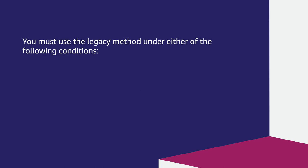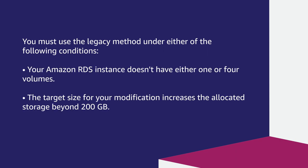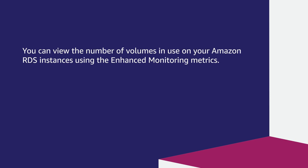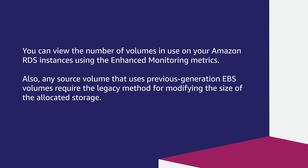You must use the legacy method under either of the following conditions: your Amazon RDS instance doesn't have either one or four volumes, or the target size for your modification increases the allocated storage beyond 200 GB. Also, any source volume that uses previous generation EBS volumes requires the legacy method for modifying the size of the allocated storage.